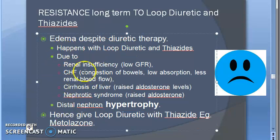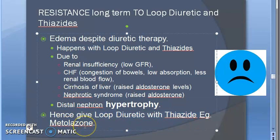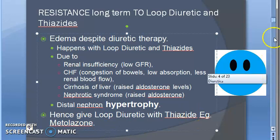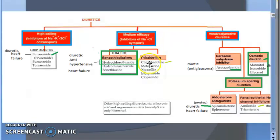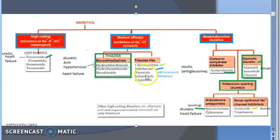The solution is to always give loop diuretics along with thiazides — specifically metolazone. Metolazone, which appears in the thiazide-like classification, when given along with loop diuretics, will prevent resistance. So combining loop diuretics with metolazone is the recommended approach to overcome diuretic resistance.